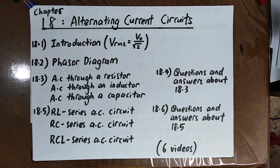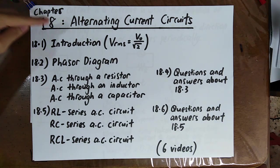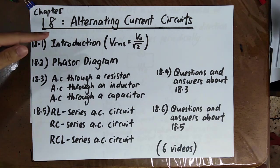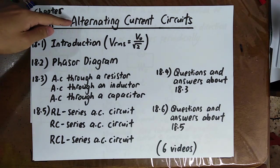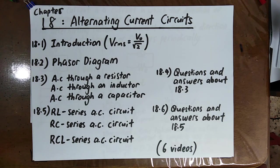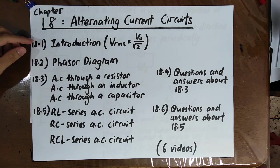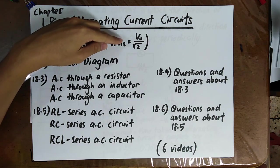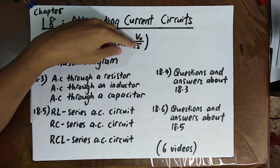Welcome to Chapter 18, where we talk about alternating current circuits. We often denote alternating current as AC. In the first video, we will cover the introduction to alternating current circuits, and I will also show you how to derive the formula: root mean square value equals the amplitude divided by square root 2.